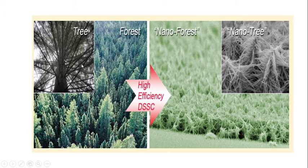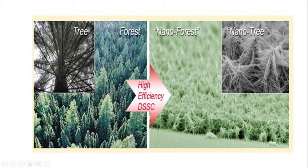Here a comparison is given between the forest and nanoforest. Nanoforest means it is a ZNO tree structure. A real forest has big trees with branches and sub-branches. Similarly, here by the hydrothermal process, zinc oxide ZNO is prepared with one backbone structure, branches, and sub-branches.